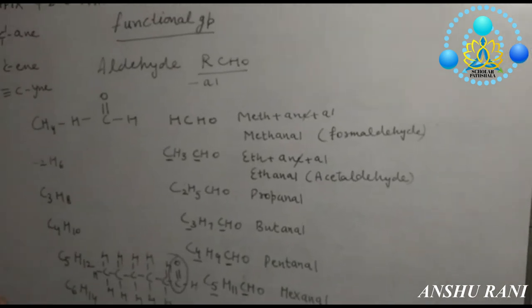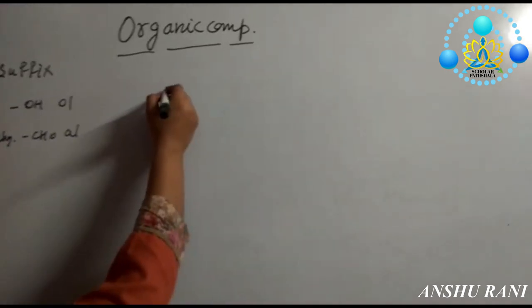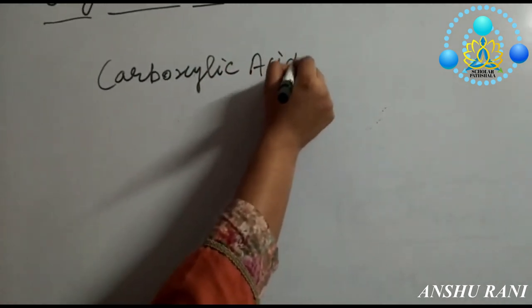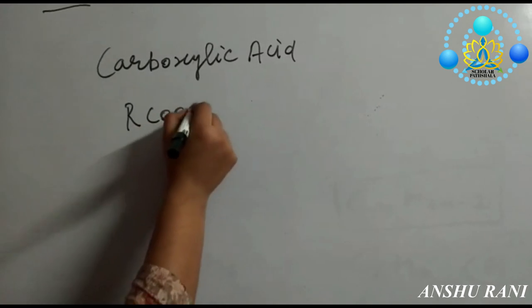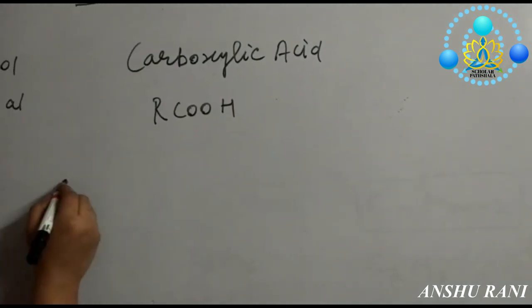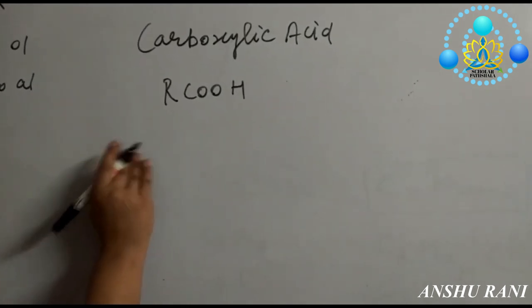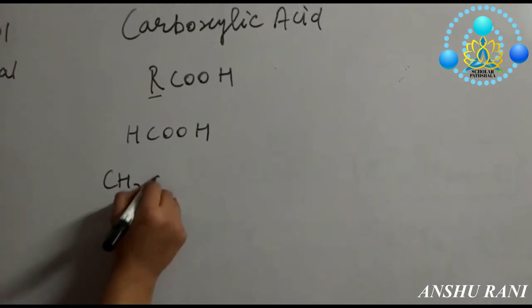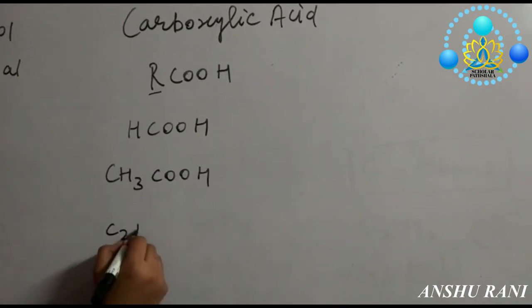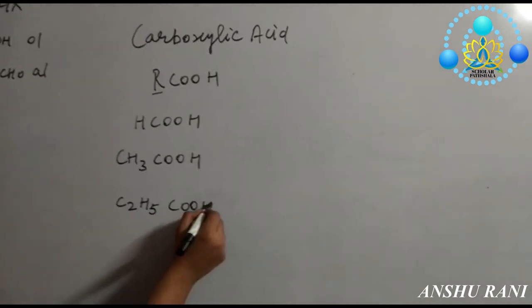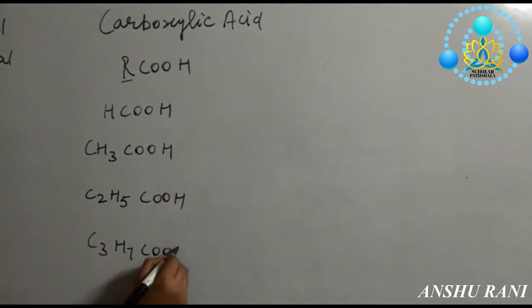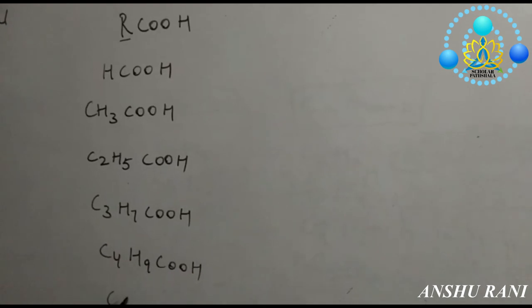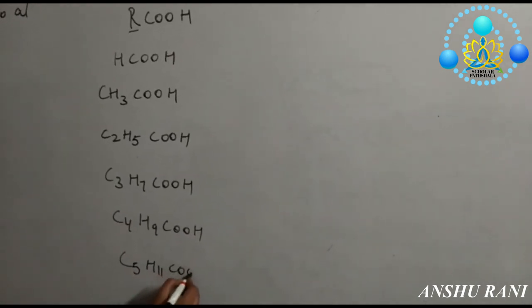Next functional group is carboxylic acid. It is written like RCOOH. So how to proceed? You have to write first name HCOOH, then second is CH3COOH. It is C2H5COOH, C3H7COOH, C4H9COOH, C5H11COOH.